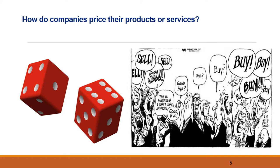Here's the focus of today's lecture: how do companies decide what price to charge for products and services, presuming they don't leave it to chance? Of course, embedded in this is that the company can actually set their prices. However, unless offering basic commodities with no brand value — for instance, like salt or oil — all companies have some control over their prices.